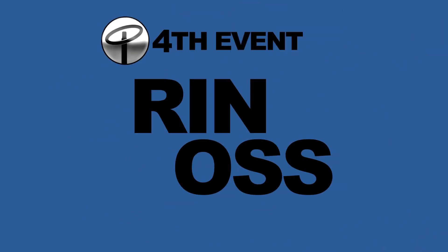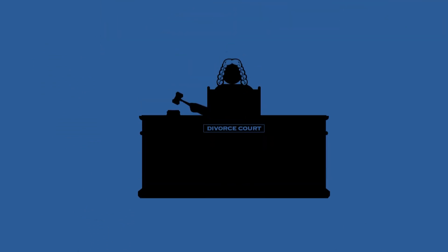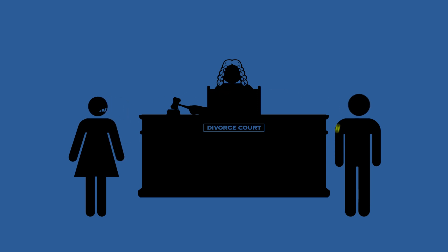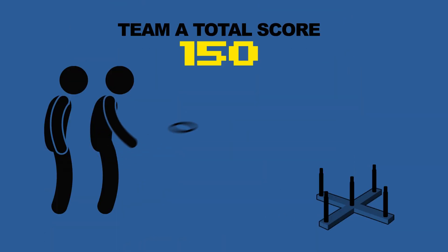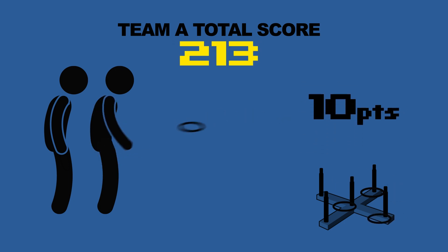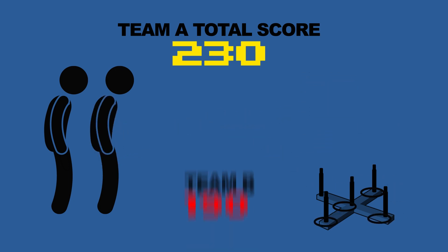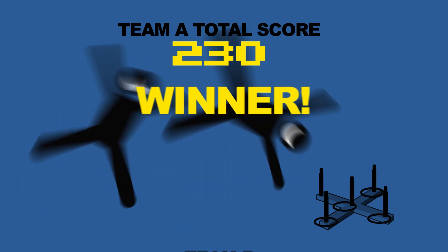Event number four, ring toss. And I don't mean divorce court. Two players from each team throw four rings per turn. The rings that stay around the post will be scored. And the team that scores the most points after four rounds wins the match.